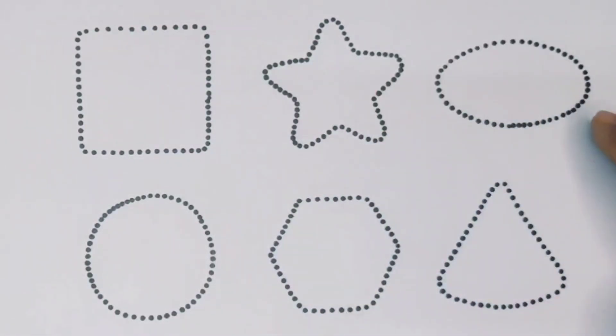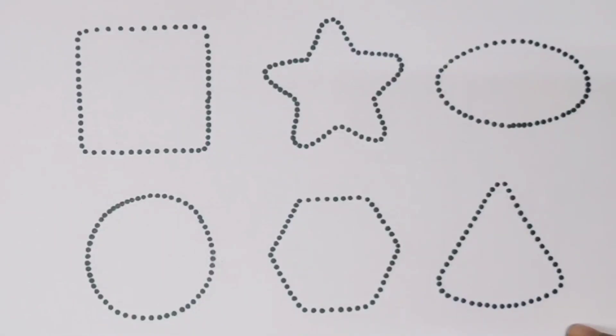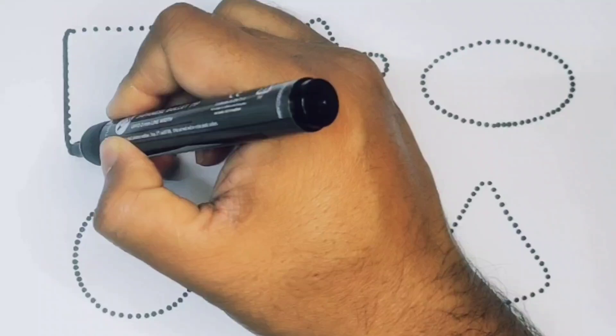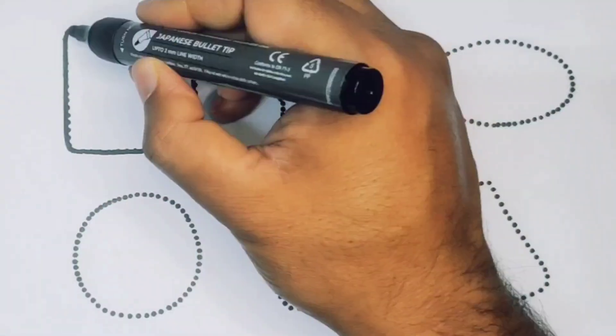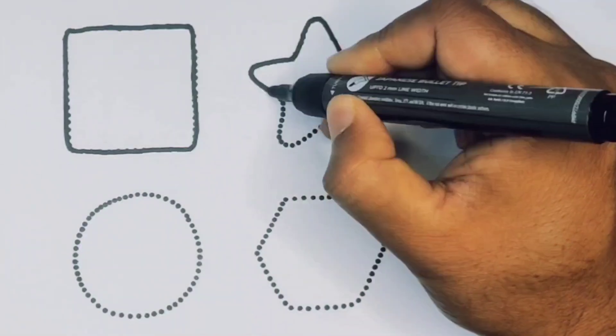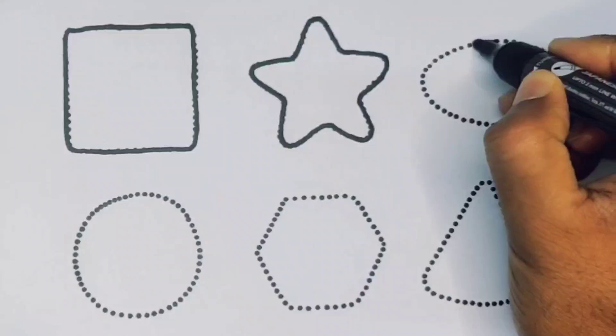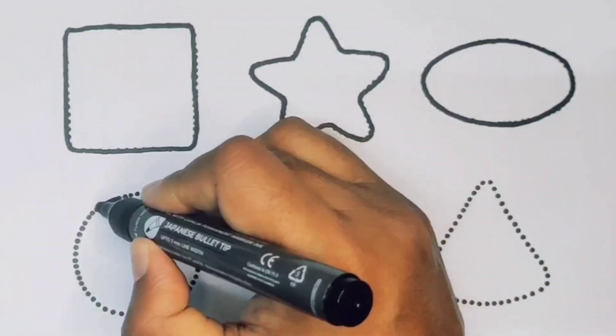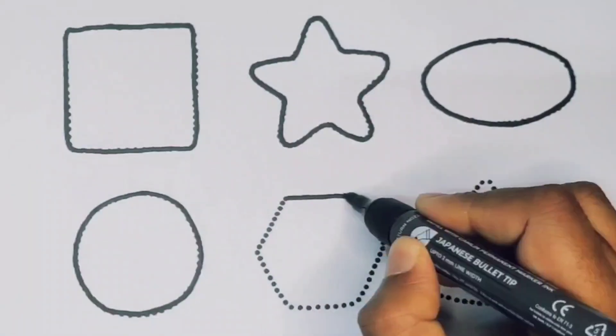Now let's learn the 2D shapes: square, star, oval, circle, hexagon, and triangle.